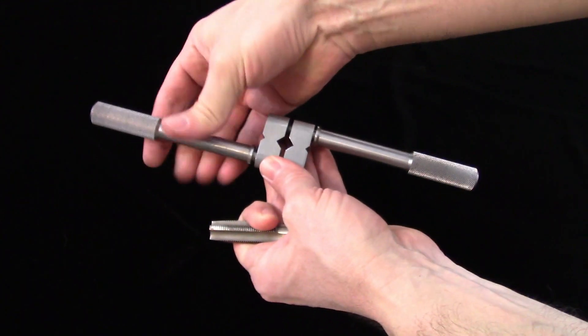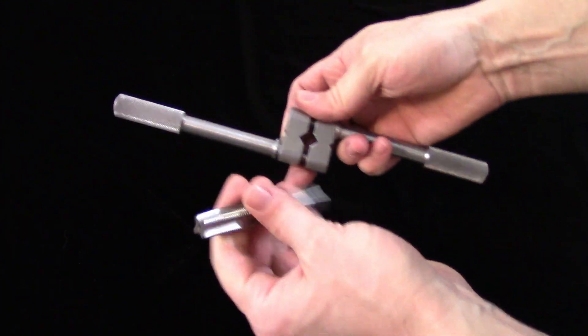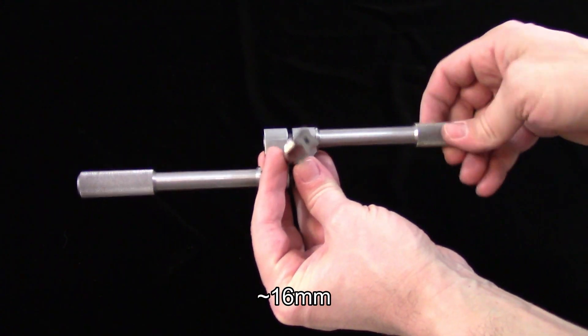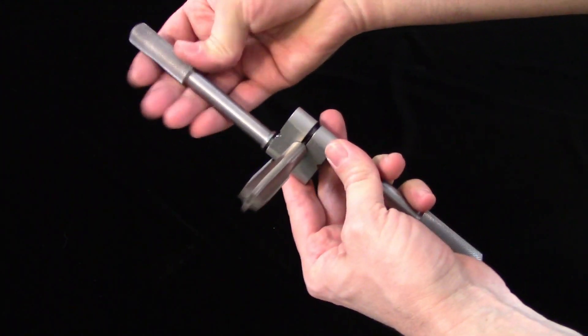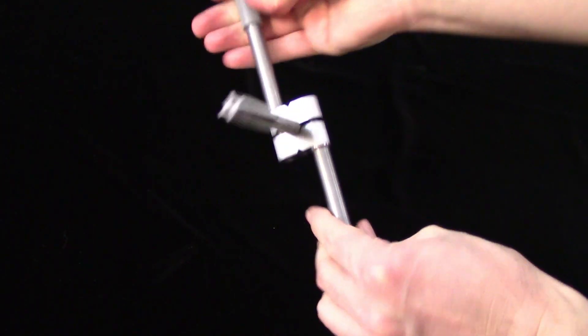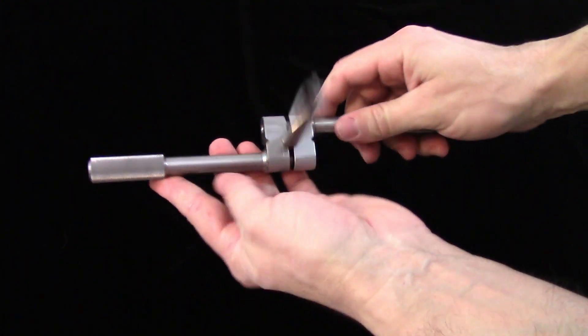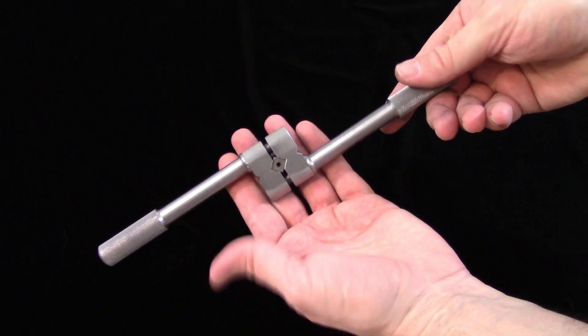Here I'm using it on one of my larger taps. This is a 5/8 tap, and you can see it fits quite well, but this is probably about as large as you can comfortably fit in the tap handle. Any bigger, and you don't have enough space between the screws of the two handles.